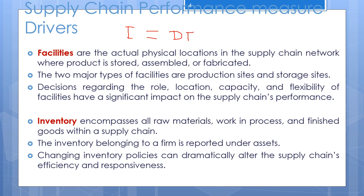The next component is safety inventory — inventory held in case demand exceeds expectations. It is held to counter uncertainty. If the world were perfectly predictable, only cycle inventory would be needed. Because demand is uncertain and may exceed expectations, companies hold safety inventory to satisfy unexpectedly high demand.